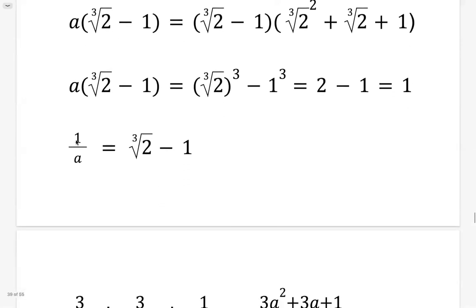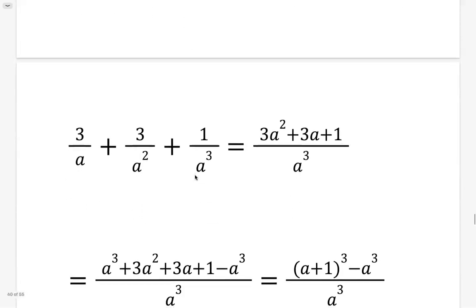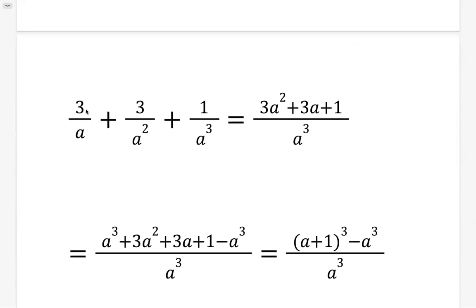So first, we have this: 1 over A equals cube root of 2 minus 1. Now we want to simplify this expression: 3 over A plus 3 over A squared plus 1 over A cubed, and simplify to be 3A squared plus 3A plus 1 divided by A cubed.